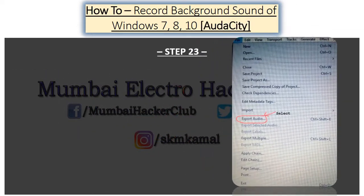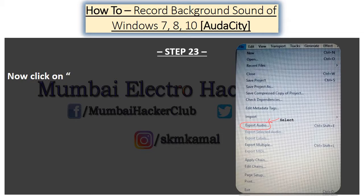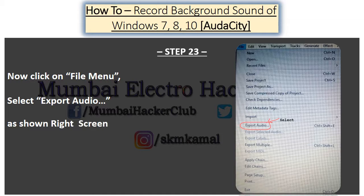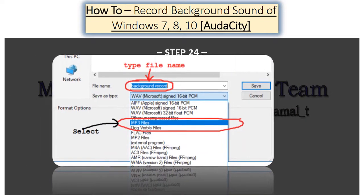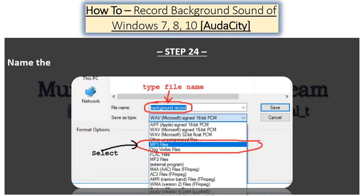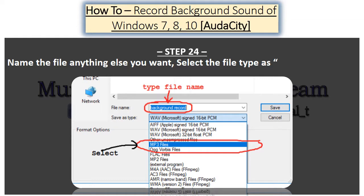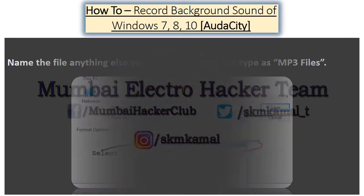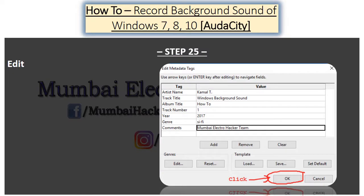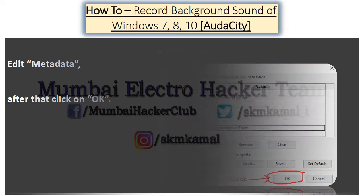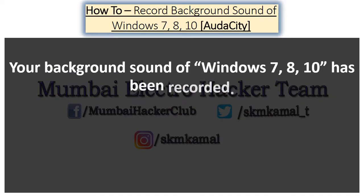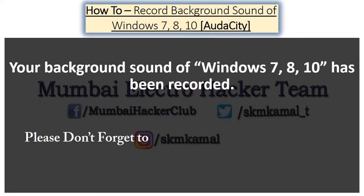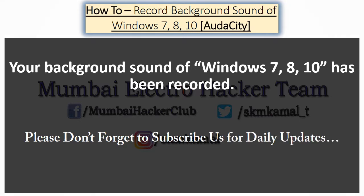Step 23: Now click on the File menu and select Export Audio, as shown on the right screen. Step 24: Name the file anything you want and select the file type as MP3. Step 25: Edit Metadata, then click on OK. Your background sound of Windows 7, 8, 10 has been recorded. Please don't forget to subscribe for daily updates.